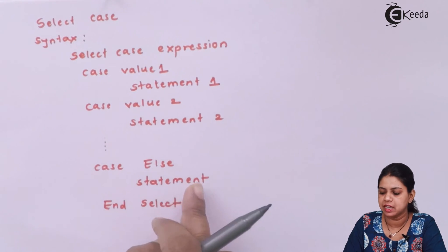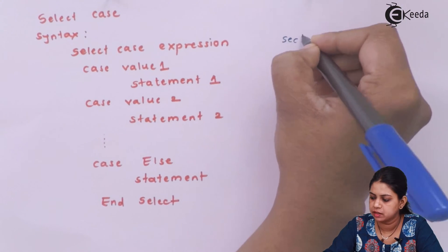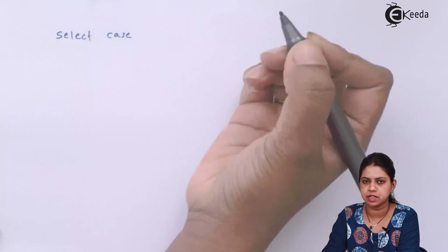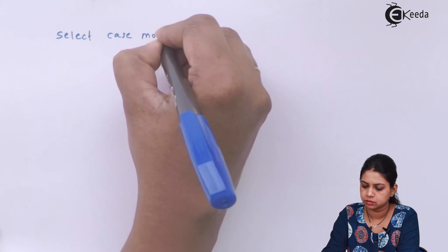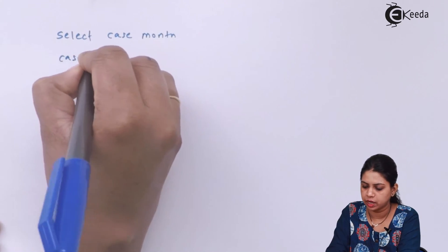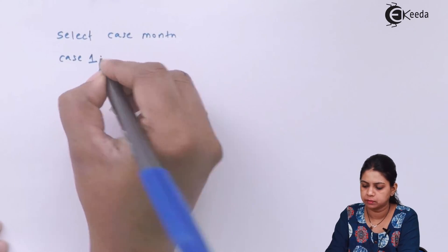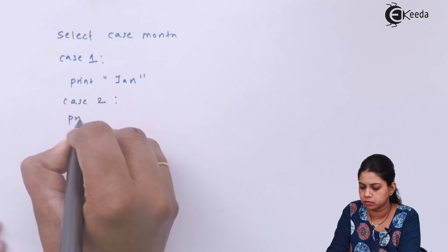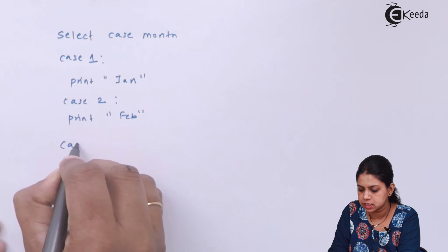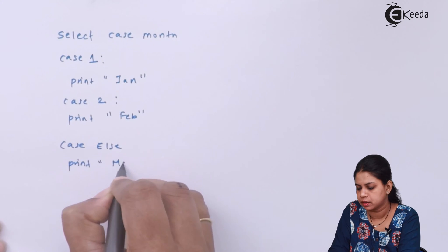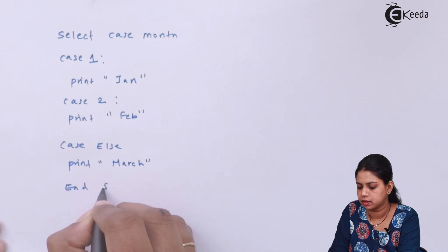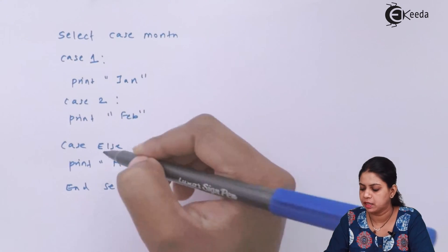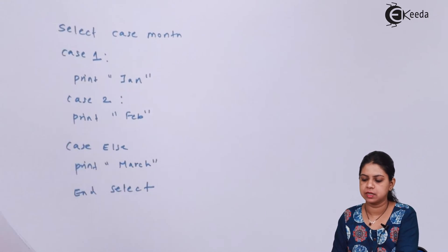Here is an example of Select Case using month: Select Case month, Case 1 print 'Jan', Case 2 print 'Feb', Case 3 print 'March', End Select. So if month is one the answer is Jan, if two then Feb, otherwise March.